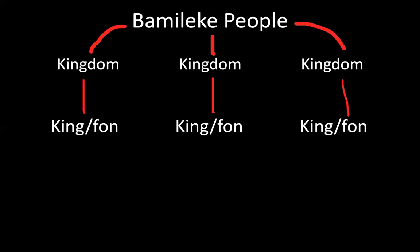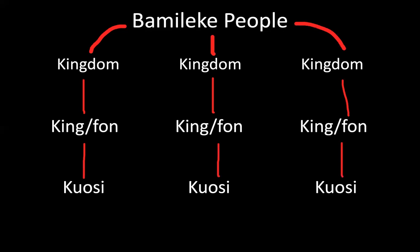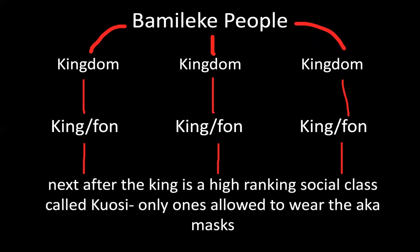Another word for a king is a fawn, so you can write fawn, or king, or both. Each kingdom had a king, and then the next in line — the upper, upper class to the fawn — is the kuosi. Write how it branches out to the kuosi, which is the high-ranking social class right after the king.